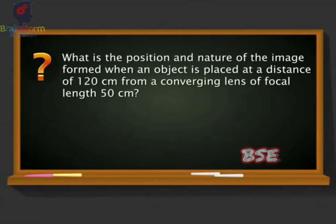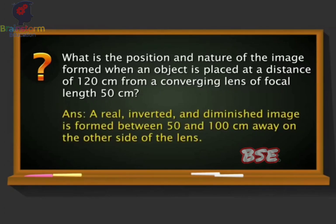What is the position and nature of the image formed when an object is placed at a distance of 120 cm from a converging lens of focal length 50 cm? As the object is beyond 2F, a real, inverted, and diminished image is formed between 50 and 100 cm away on the other side of the lens.